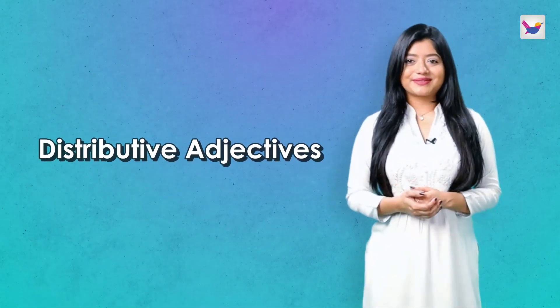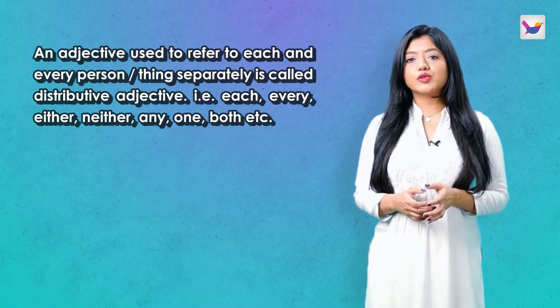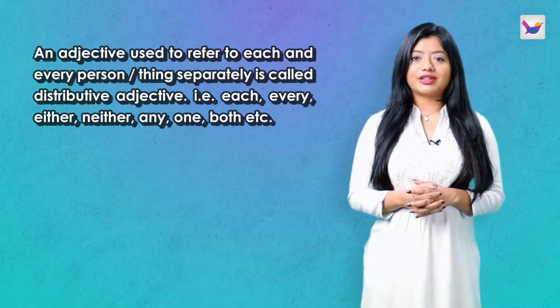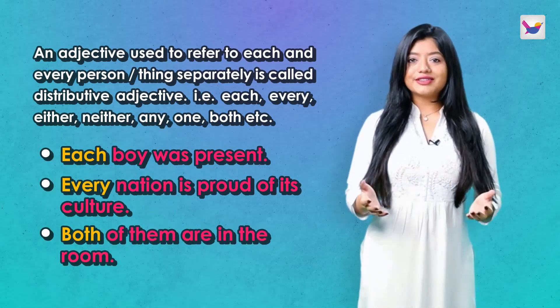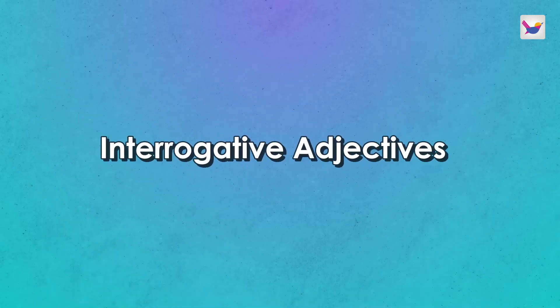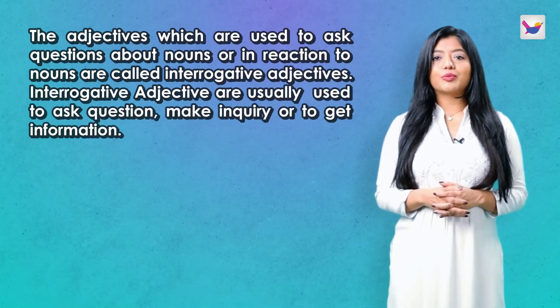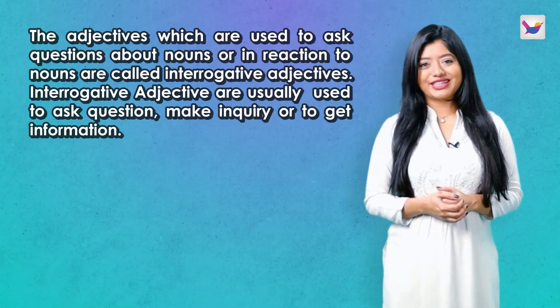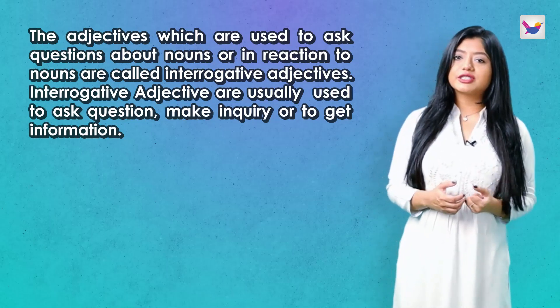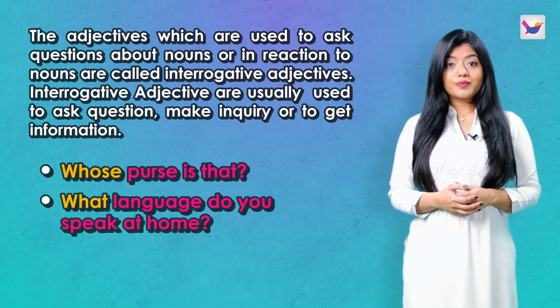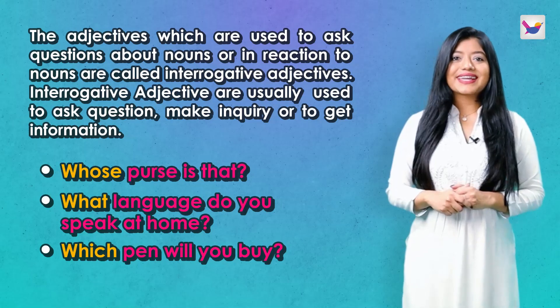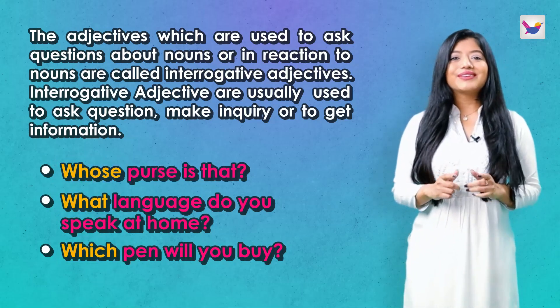Now let's move to Distributive Adjective. The adjective used to refer to each individual person or thing separately is called a Distributive Adjective. For example: Each boy was present. Every nation is proud of its culture. Both of them are in the room. Finally, let's learn about Interrogative Adjectives — the adjectives used to ask questions about nouns, or used to ask for information. For example: Whose purse is that? What language do you speak at home? Which pen will you buy?